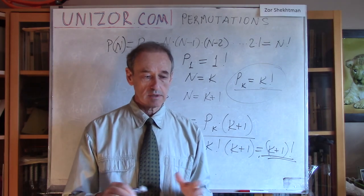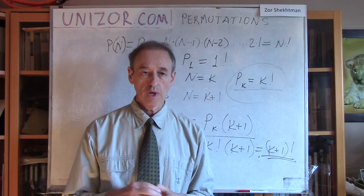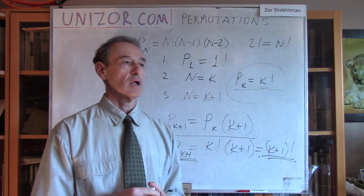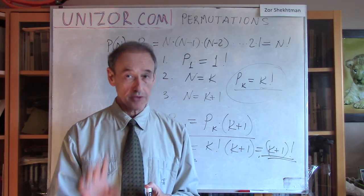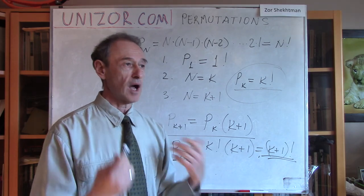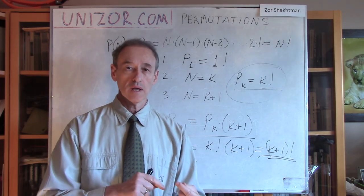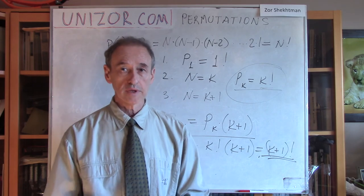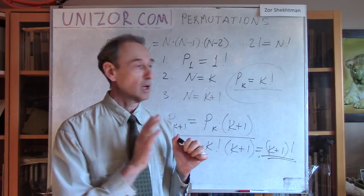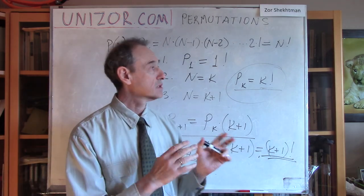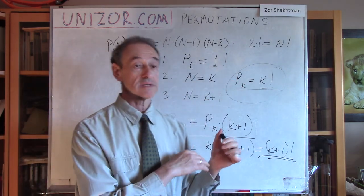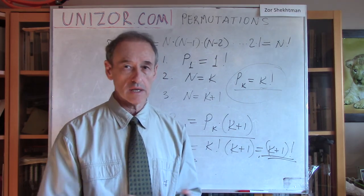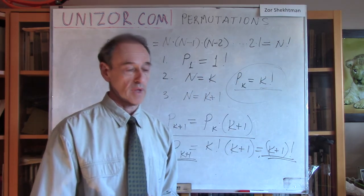Anyway, this is the final result I wanted to present to you, the permutations of certain number of objects, number of permutations. I assume that objects are different, because if the objects are the same, you will not be able to differentiate one permutation from another. And this is yet another problem in combinatorics, which we will address. But right now, we are talking about different objects which are positioned in certain order. And the question is how many different orders of positioning of these N objects exist. And the answer is N factorial.